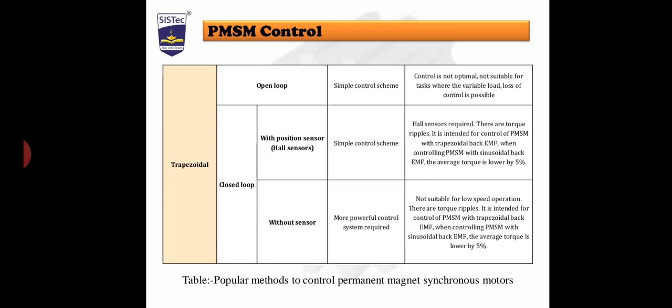Moving on to closed loop control with position sensor using a Hall effect sensor: the advantage is a simple control scheme. The drawbacks are that a Hall effect sensor is required and there is torque ripple.